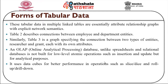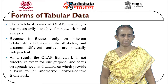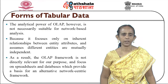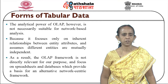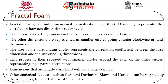These multiple linked tables essentially describe attribute relationship graphs with explicit network semantics, describing connections between employee and department entities, or between researcher and grant entities each with its own attributes. An OLAP (online analytical processing) database, unlike spreadsheets and relational databases, is not built for low-level atomic operations such as insertion and update, but for analytical purposes. It uses data cubes for operations such as slice, dice, roll-up and drill-down. However, OLAP is not suitable for network-based analysis as it assumes different entities are mutually independent. Therefore, the focus remains on spreadsheets and databases which provide a basis for an alternative network-centric framework.